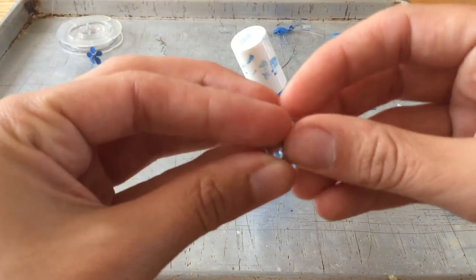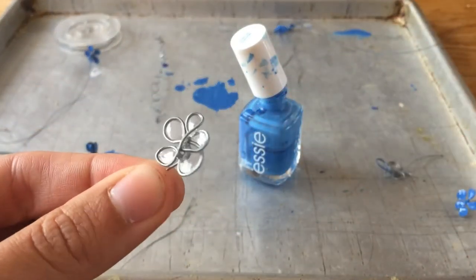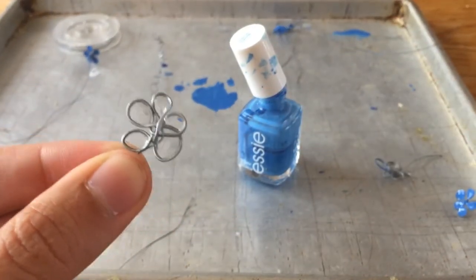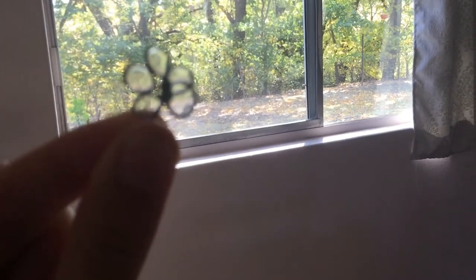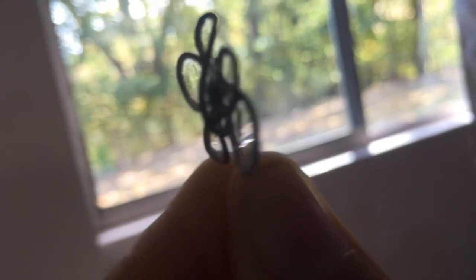You can also use clear nail polish. Obviously you still get the wire, but it has a kind of nice effect, and if you hold it up to the sun, the window, that looks pretty cool. Like that.